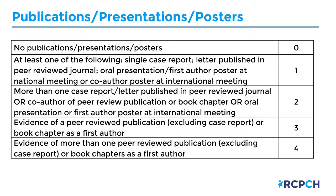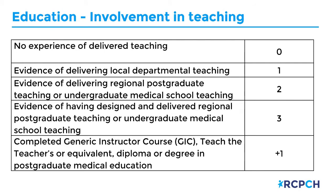For publications, presentations and posters: this year we won't put a bar on the maximum number of marks awarded if you leave your name on the publication, but we would encourage you not to include your name on any publications or author lists for posters. You are able to state on Oriel whether you are submitting evidence as a co-author, presenter, or first author. For education, there's a potential maximum of four marks: up to three marks for teaching involvement in your description, and an extra mark if you've completed a generic instructor course, Teach the Teachers or equivalent, or undertaken a diploma in postgraduate medical education.